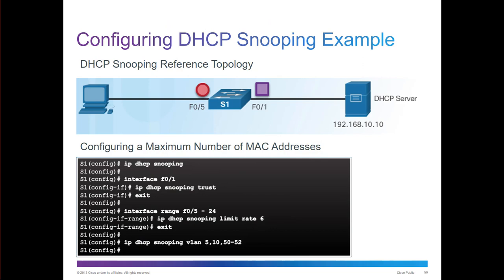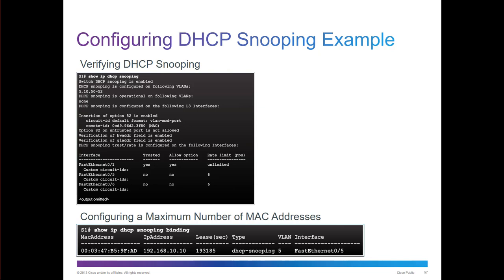To enable DHCP snooping, go to global configuration and type 'ip dhcp snooping'. Then navigate to the appropriate interface you want to trust and do 'ip dhcp snooping trust'. You can also do a snooping limit rate to limit the rate, and through global configuration set which VLANs to snoop. Verify with 'show ip dhcp snooping' to see bindings, addresses, and leases.